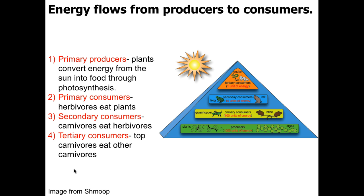Then we get tertiary consumers or third level consumers, which are carnivores that generally eat other carnivores, although sometimes they will eat herbivores. We can also have a quaternary or fourth level consumer, but it's not shown on this pyramid.